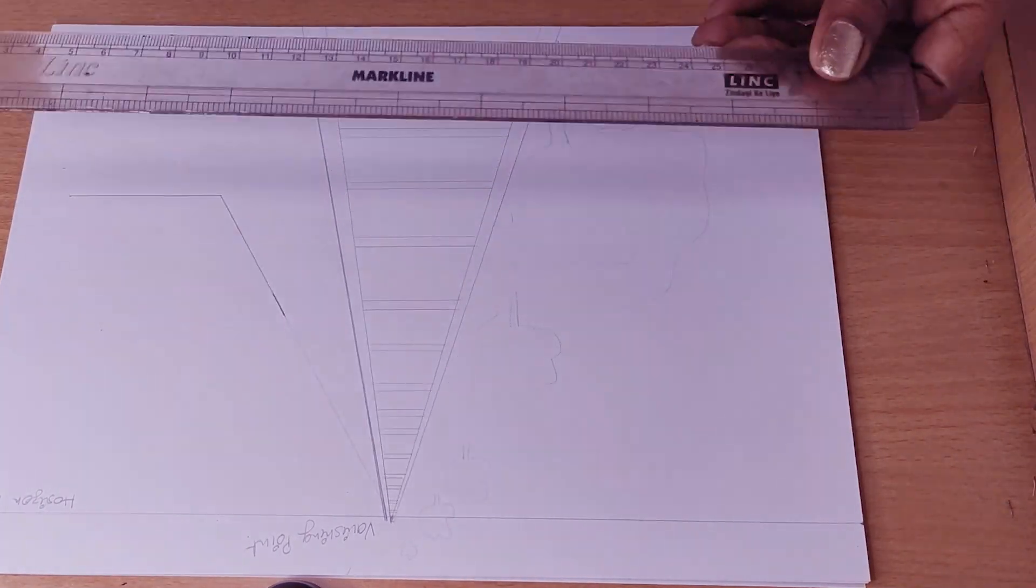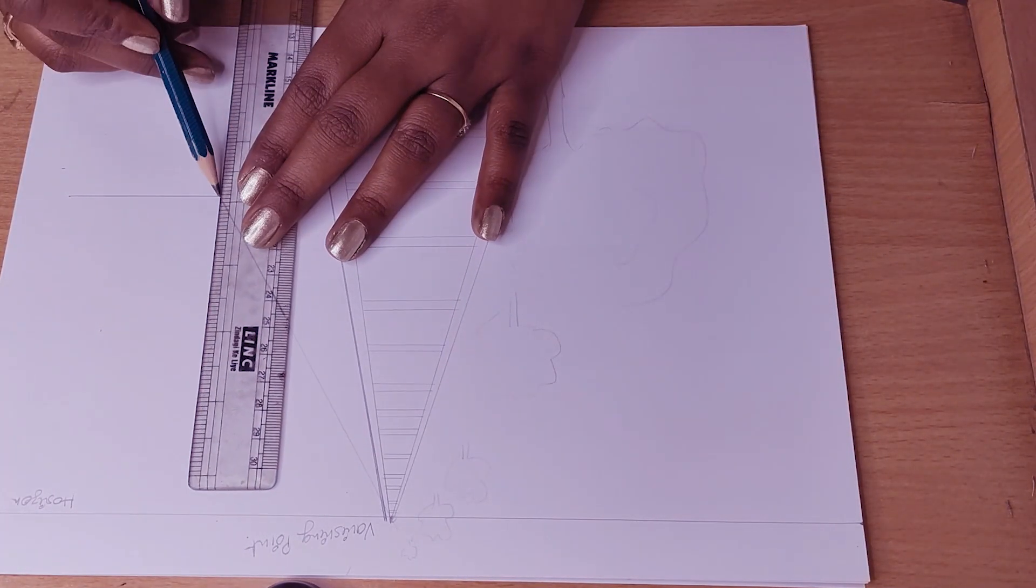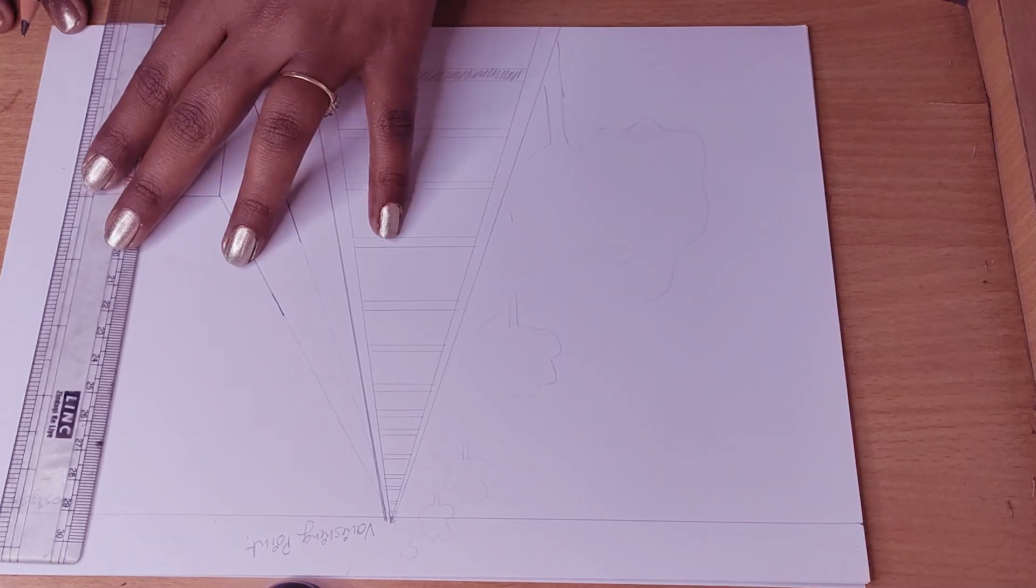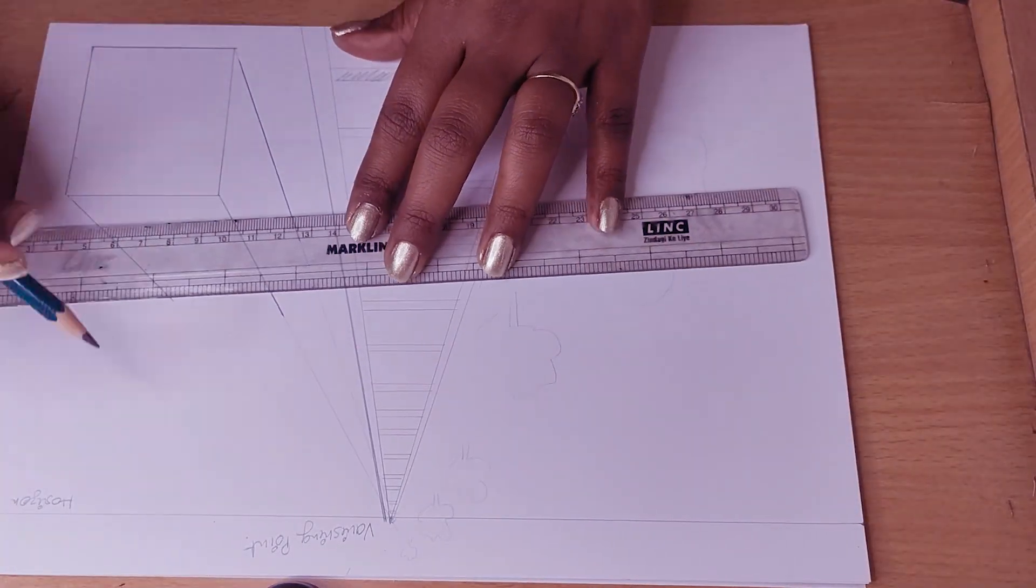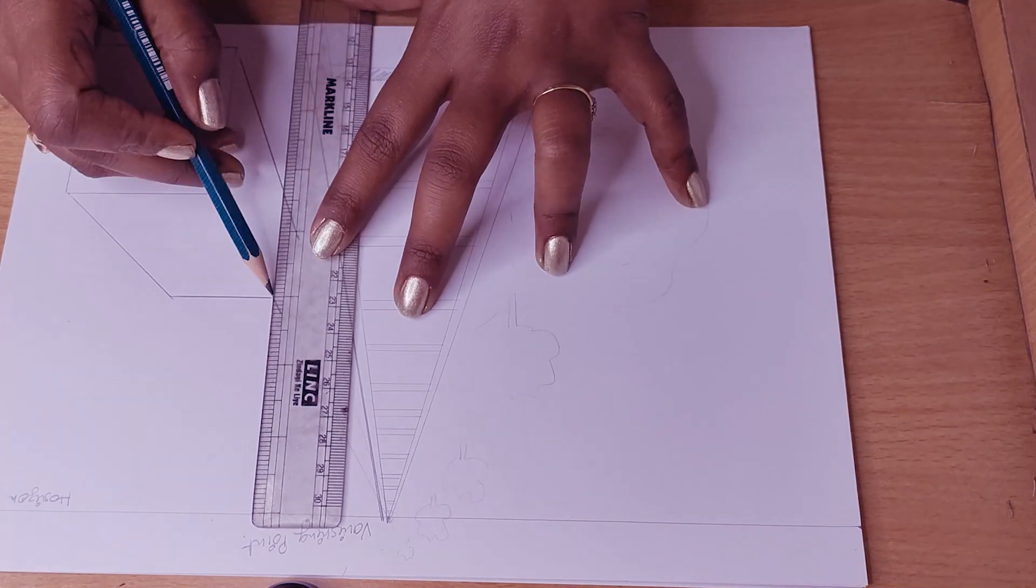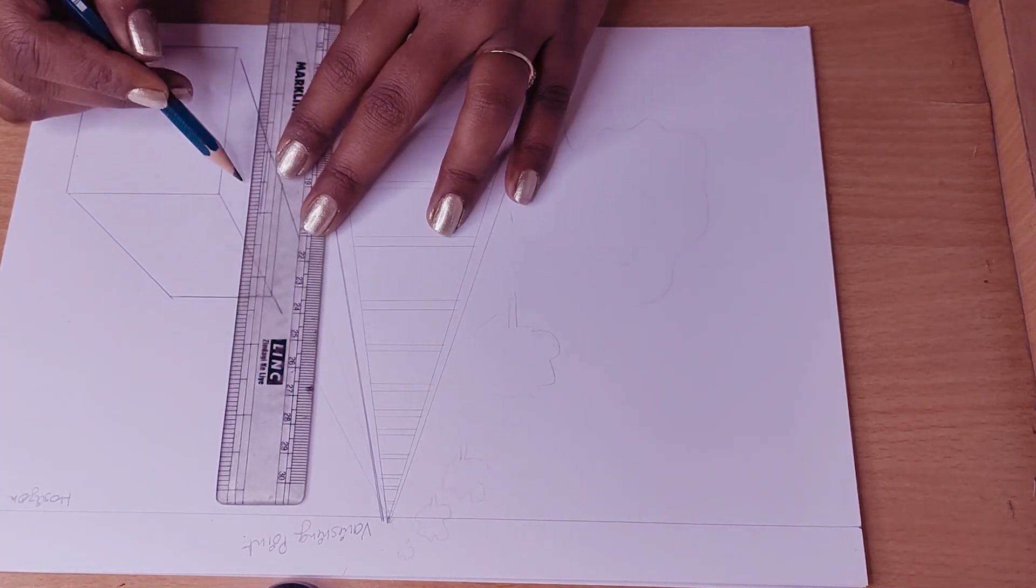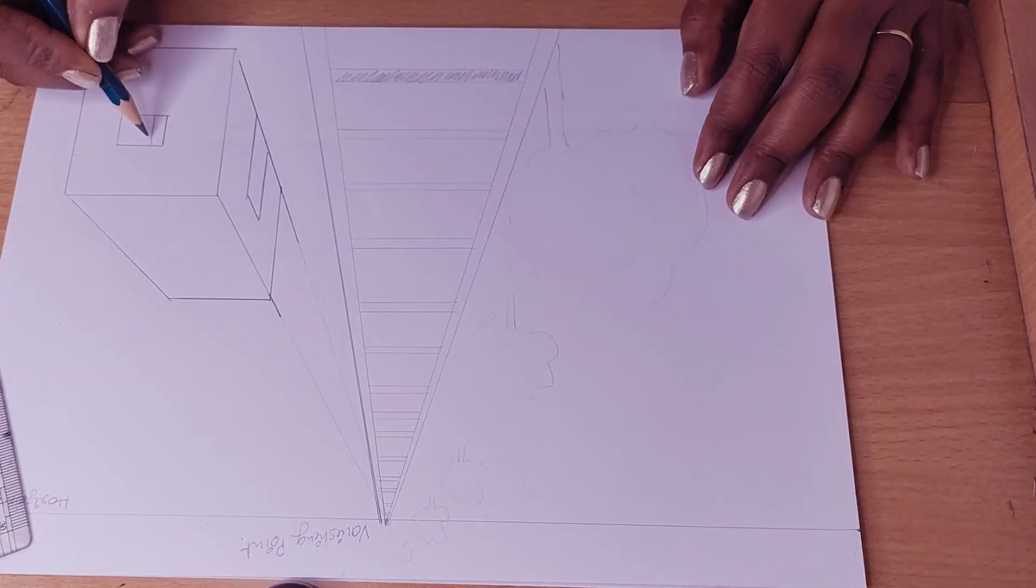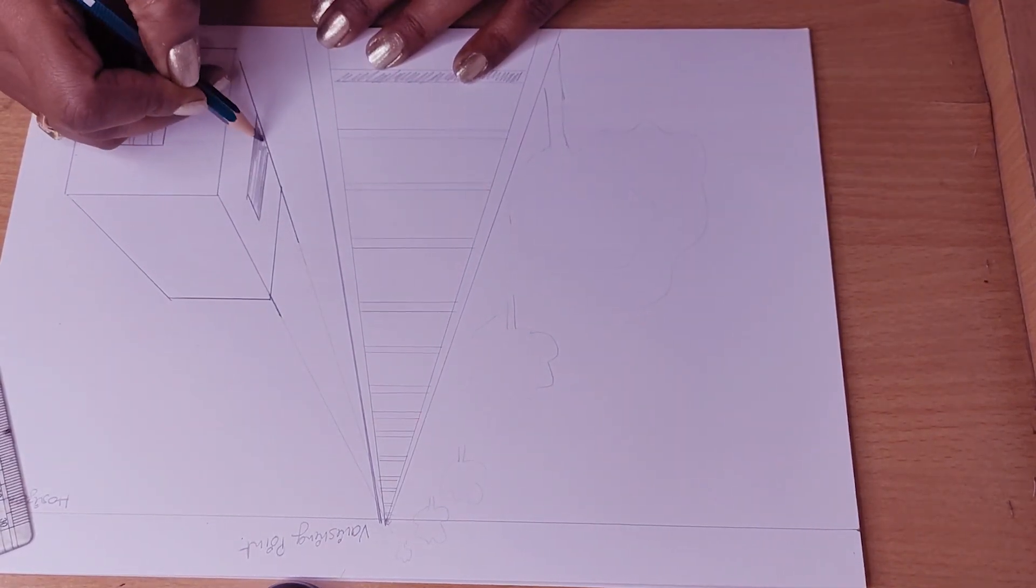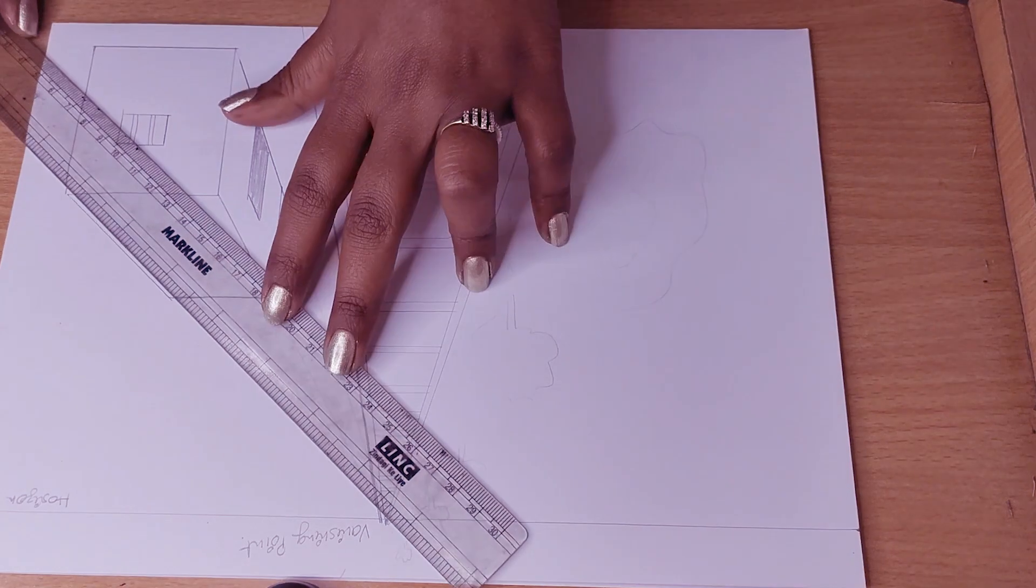I am showing you some examples of one-point perspective. Here it is. In this picture you can see vanishing point where all lines meet together. One most important thing: when we draw, front object or building or whatever you are drawing will be bigger than back side object.